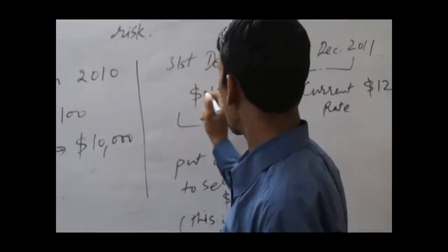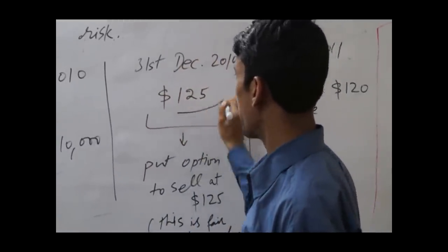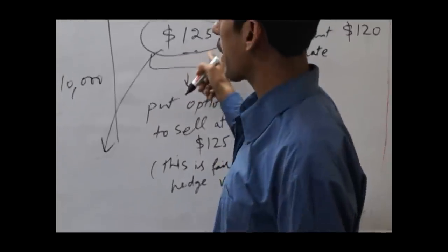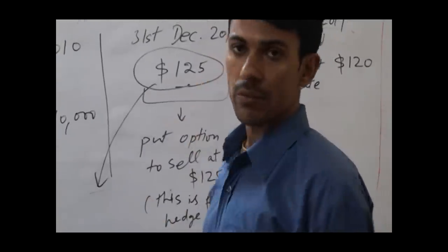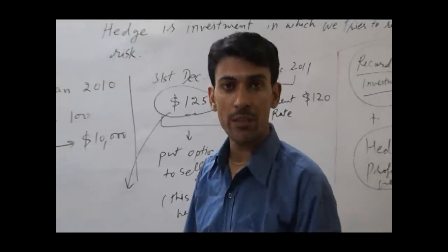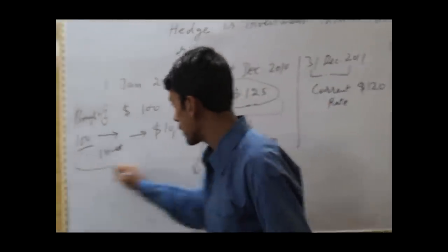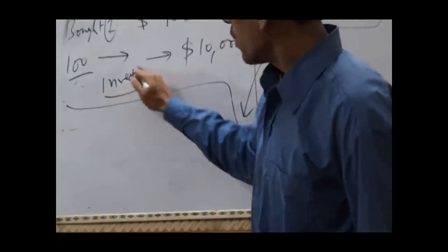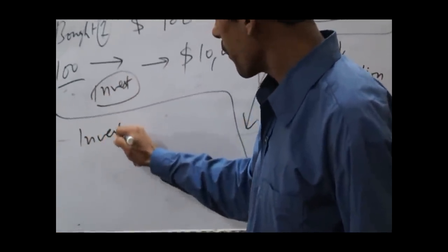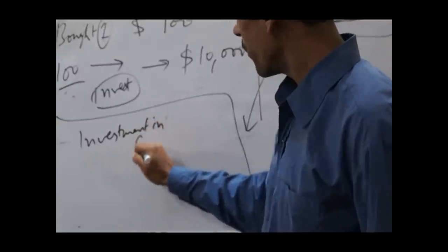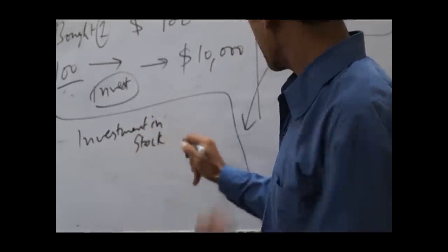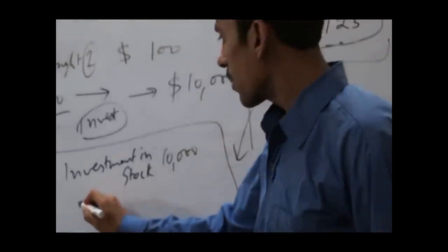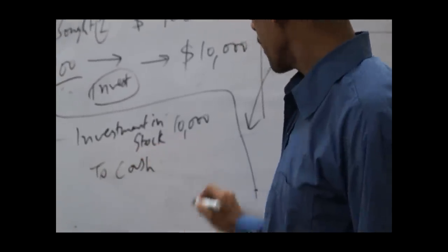per share. So for my initial investment, I will pass two entries. One is I am doing the investment: Investment in Stock $10,000 to Cash $10,000.